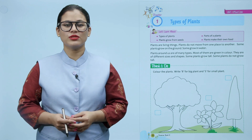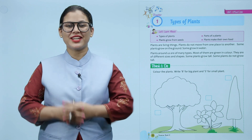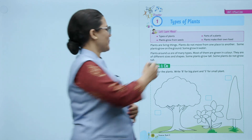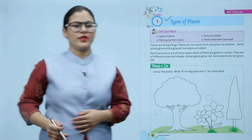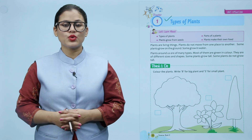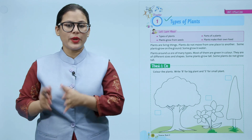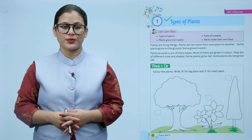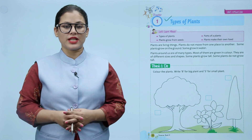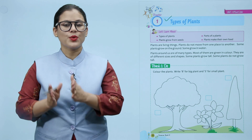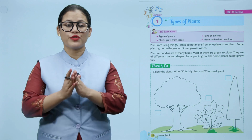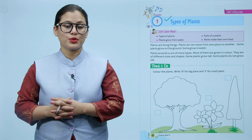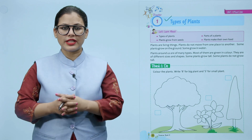Hello children, how are you all? I'm sure you all are doing good. Let's start today's chapter: Types of Plants. Plants are living things. Plants do not move from one place to another. Some plants grow on the ground, some grow in water. Plants around us are of many types. Most of them are green in color. They are of different sizes and shapes. Some plants grow tall, some plants do not grow tall.